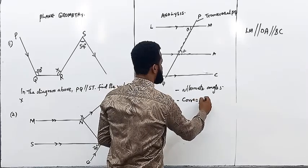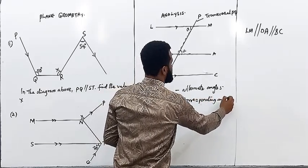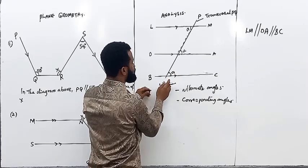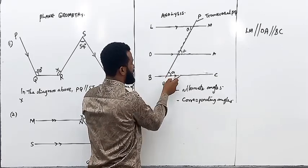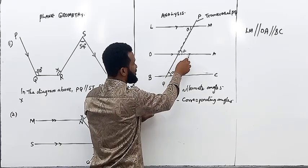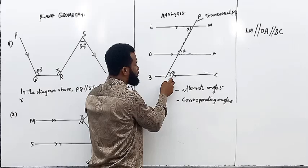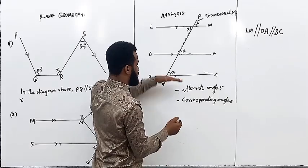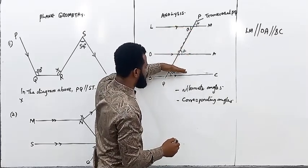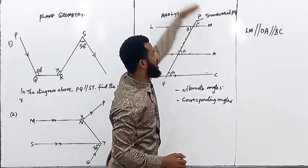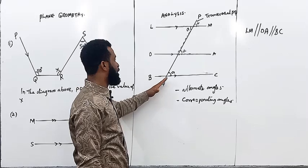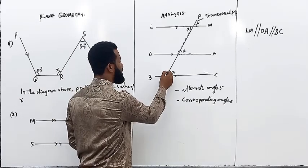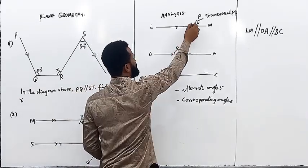Another angle associated with parallel lines and a transversal is corresponding angles. If this angle is A, then this one is also A, and this one is also A — provided this is the transversal and the lines are parallel. This angle must be the same as the one on the next parallel line. They are just step on step. If the angle is B here, then it will be B here and B there — those are all corresponding angles.